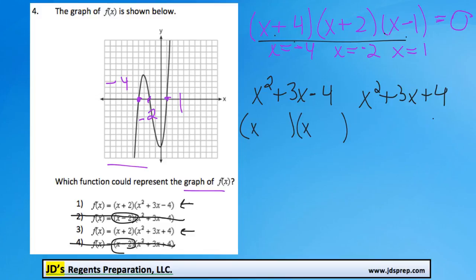Okay, so for this first one, we're looking for two numbers that multiply to get negative 4 and add to get positive 3. That would be positive 4 and negative 1.